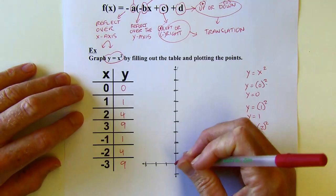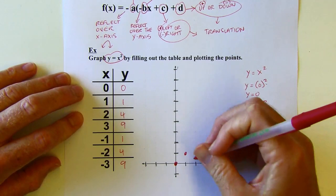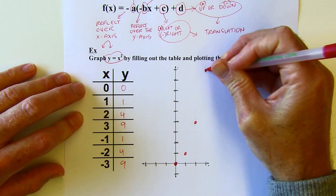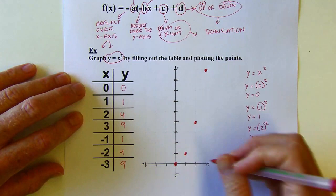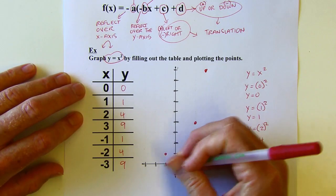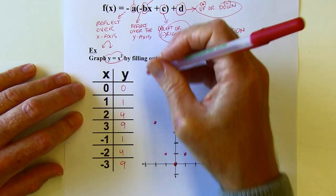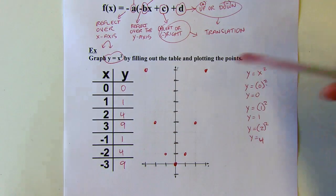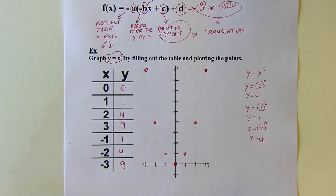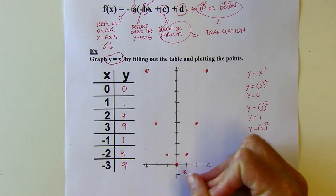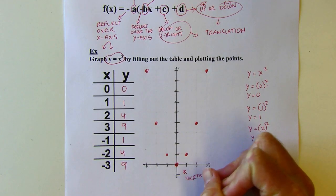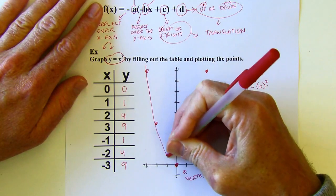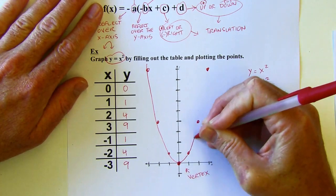Let's plot these points: (0,0), (1,1), (2,4), and then (3,9) — which goes all the way to the top of the graph. Then we get the mirror images: 1 left/1 up, 2 left/4 up, and 3 left/9 up. This gives a U-shaped curve. It's not a V made of straight line segments like an absolute value function — it's curved.